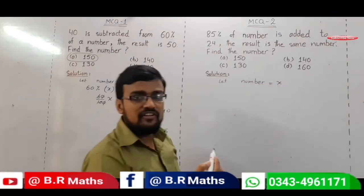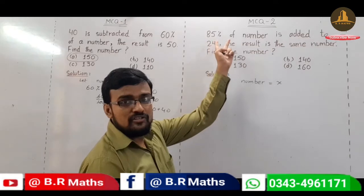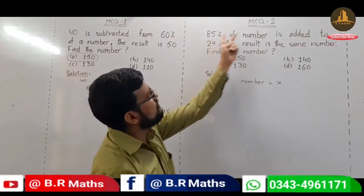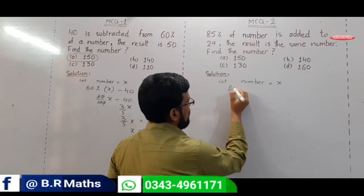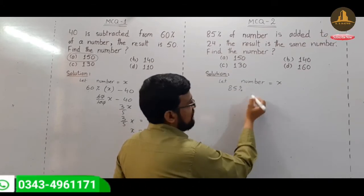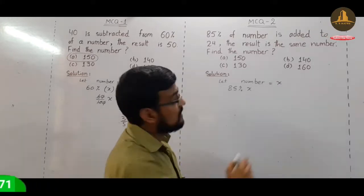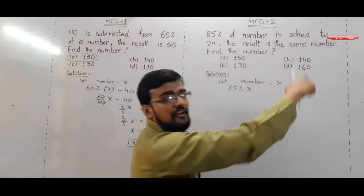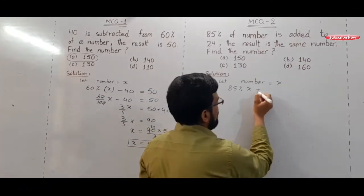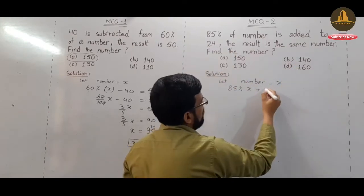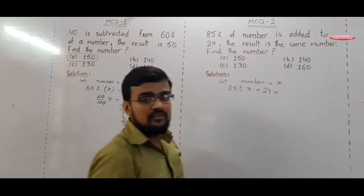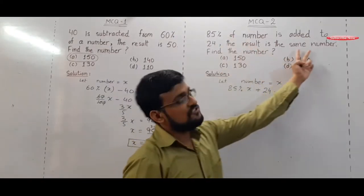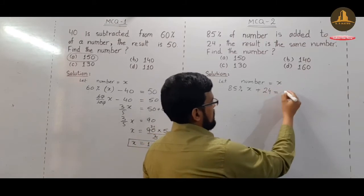And what is the condition of this question? It means 80% of a number. 80% means, sorry 85% means 85% of X is added. Added means plus 24. And the result is the same number, same result is also X.